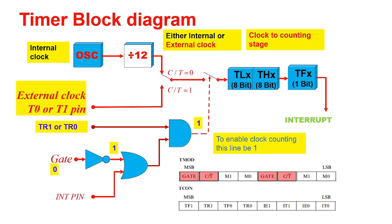See here in this timer clock diagram — very important. This is your internal clock, which is the oscillator frequency divided by 12. This is your switch. If C bar T is connected to default, it will be 0, meaning it is in timer mode using the internal clock. If it is connected to 1, it will work like a counter.